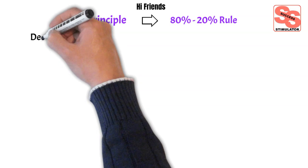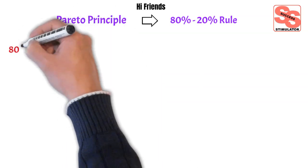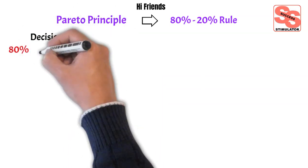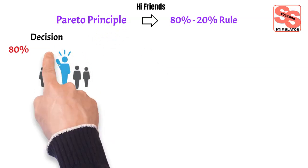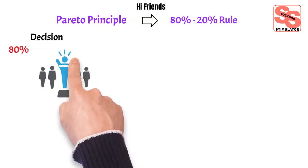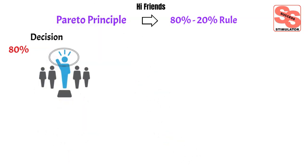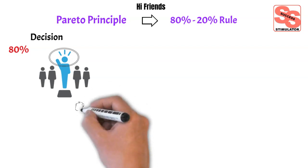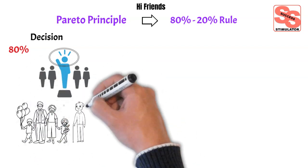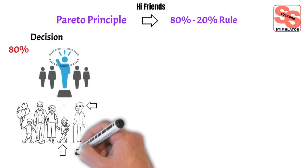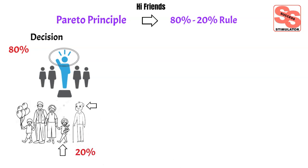The first example is Decisions. In an organization, 80% of decisions are made by 20% of people — people like chairpersons or board members used to take maximum decisions. Even in a family, elders take 80% of decisions, whereas youngsters only make 20% of decisions.